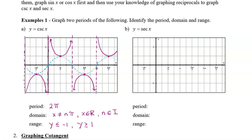Now let's do the same thing with secant. The secant graph is the reciprocal of the cosine graph. So again let's graph cosine first. This time we start at the point (0, 1), reach (2π, 1), and at pi it's negative one. We plot points at pi over two and three pi over two on the x-axis. We draw this as a dotted graph as our guide — the cosine graph is just a shift of the sine graph. Then we draw in asymptotes where the cosine equals zero: at negative pi over two.